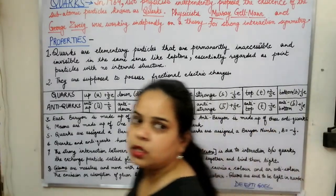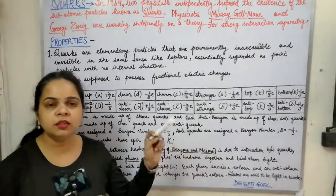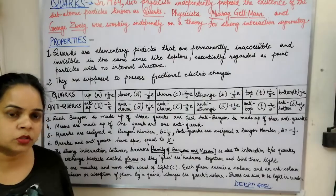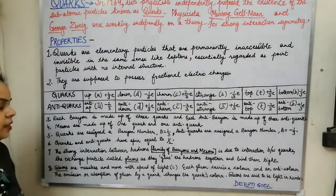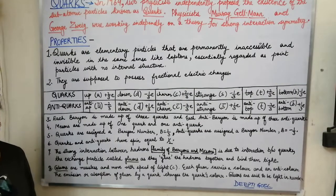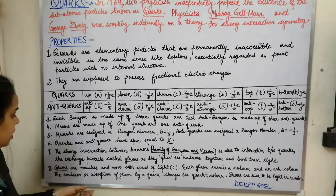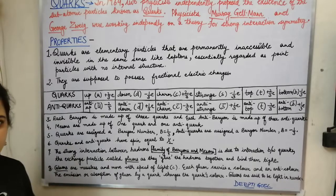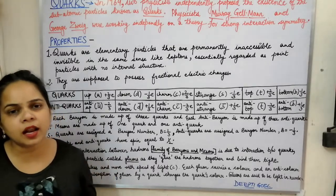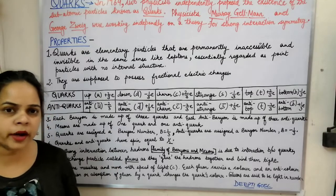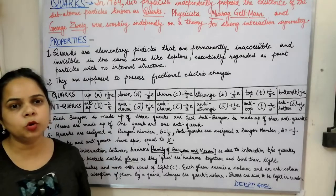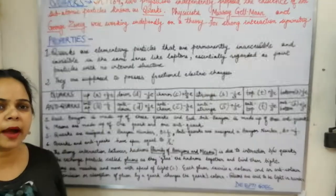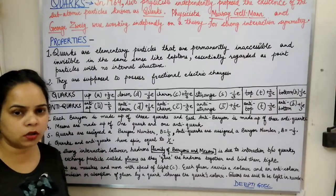Each gluon carries a persistent color and an anti-color. When quarks interact through the exchange of gluons, they are emitting or absorbing gluons. The absorption and emission of gluons imparts color to the quarks. Quarks have certain colors — blue, red, and green are the primary colors — and these colors are imparted by the exchange of gluons.